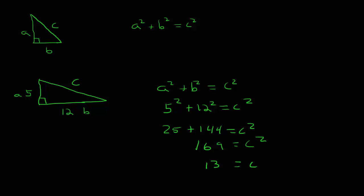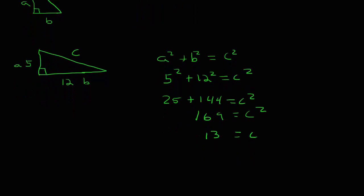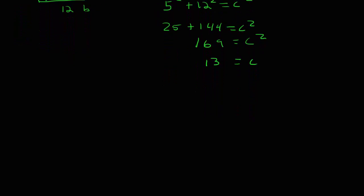However, we can also find the length of one of the legs if we know the hypotenuse and the other leg. Let's take a look at this example, and let's orient our triangle a little differently this time, because our triangle can be oriented any way we want in space.